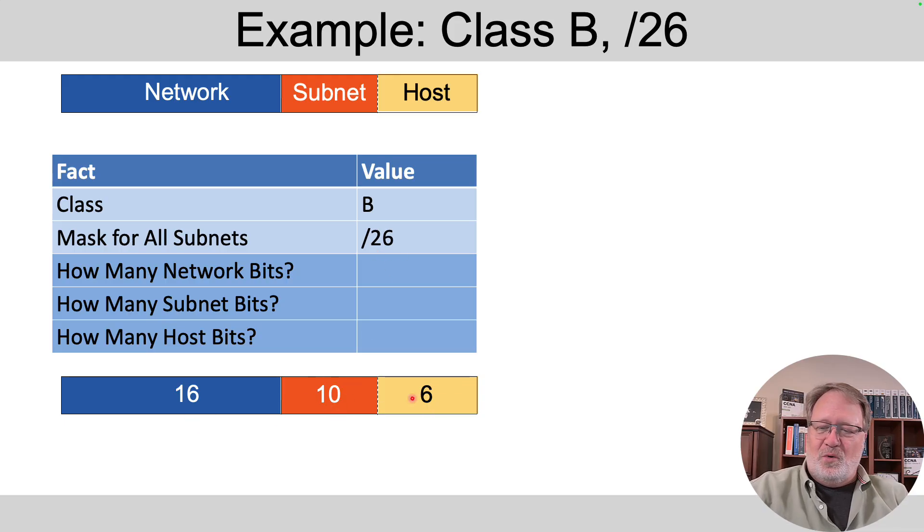16 plus 10 plus 6 more gives us 32. So that confirms we've got 6 host bits. Or 32 minus the prefix length gives us 6 host bits as well.